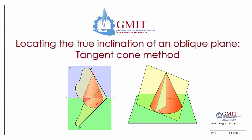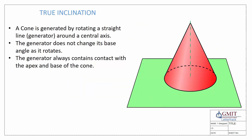Hello and welcome back to our webcast series on the topic of plane and descriptive geometry. In this video we're going to show you how to locate the true inclination of an oblique plane using the tangent cone method, which is an alternative method to the auxiliary method seen in our previous video. We'll begin by looking at the background of what a tangent cone actually is.